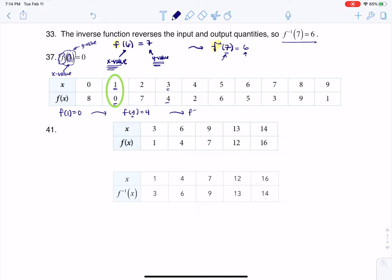if I asked you for something like f inverse of 3, that's when things get a little funkier. Because yes, this 3 is technically an x value. But it's an x value on the inverse function. So it's secretly a y value.